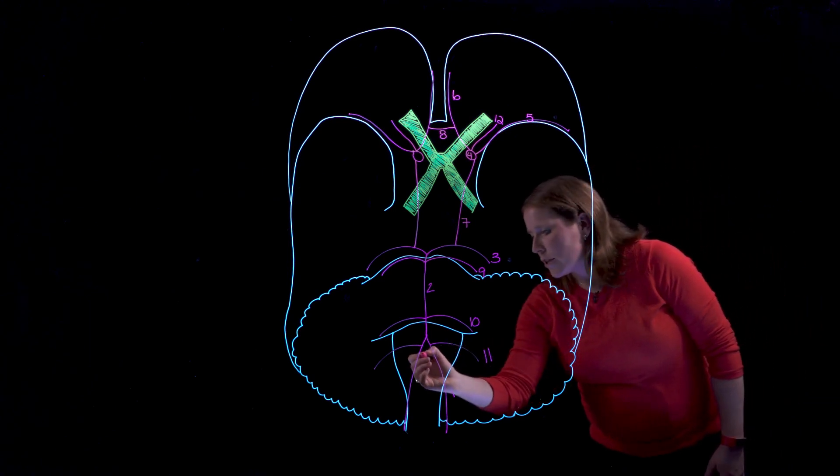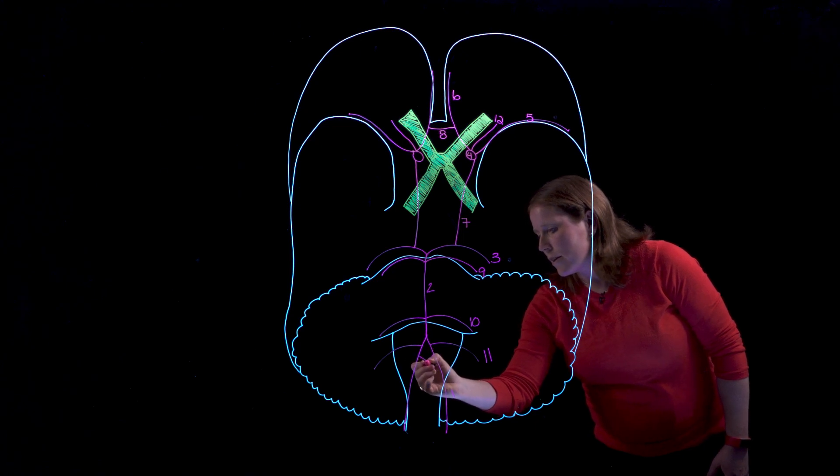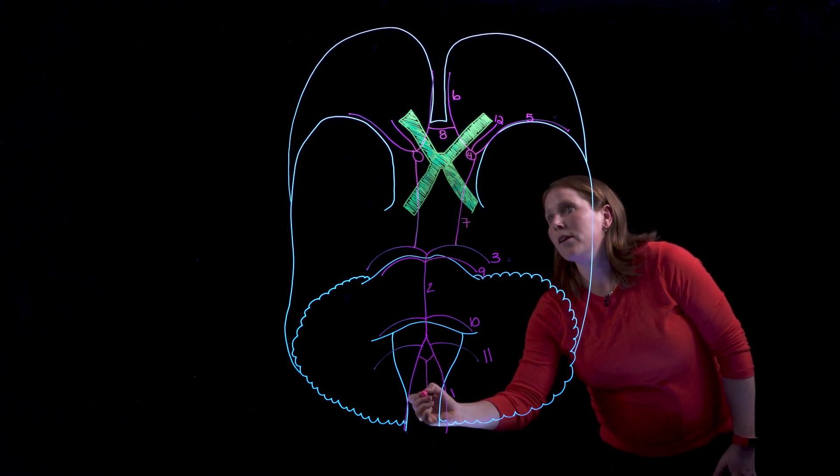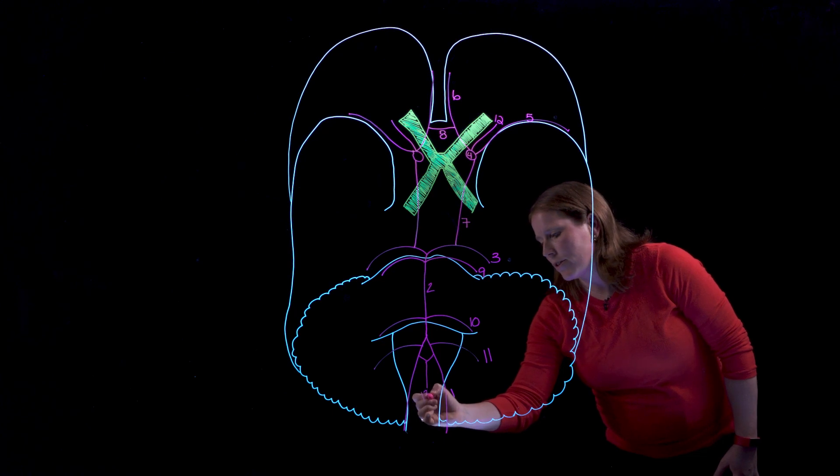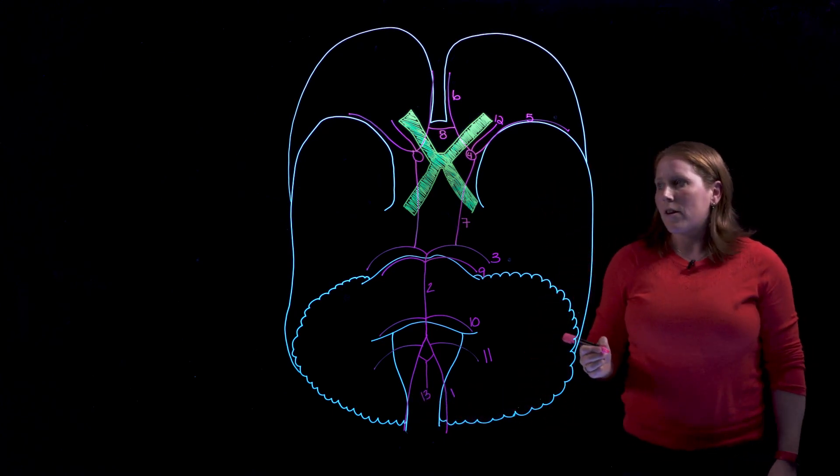The last branch that we'd ask you to identify is this small midline branch here called the anterior spinal artery and that's all.